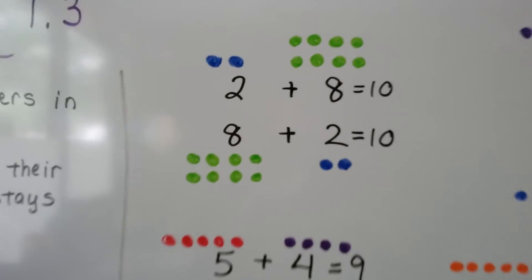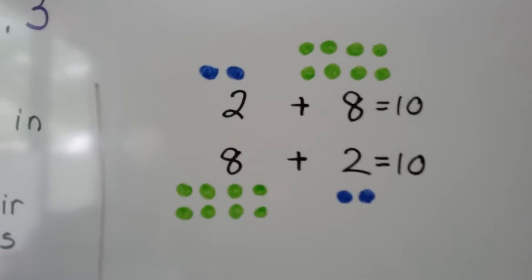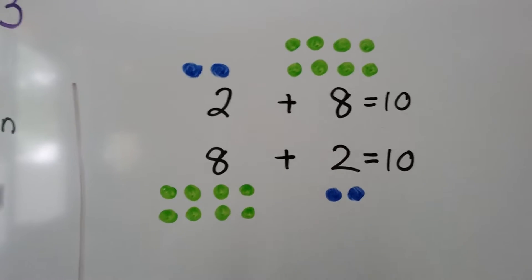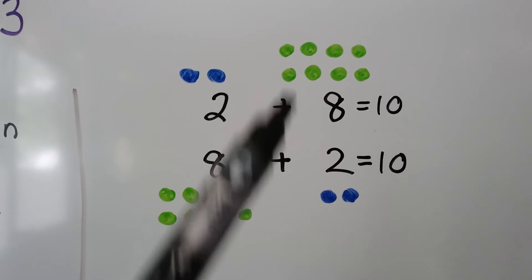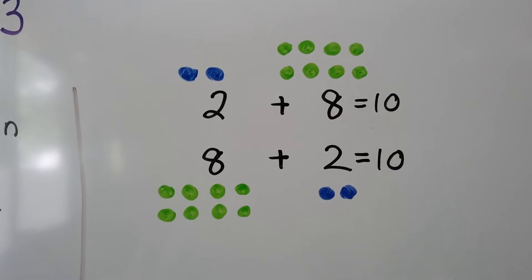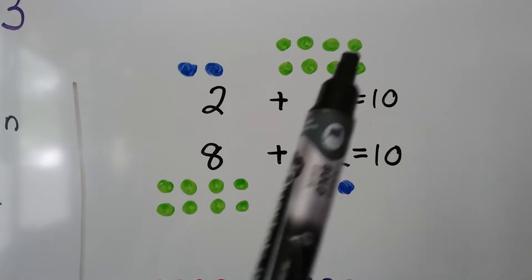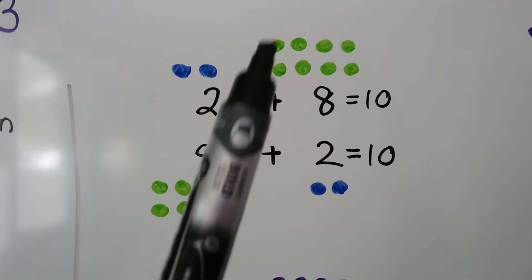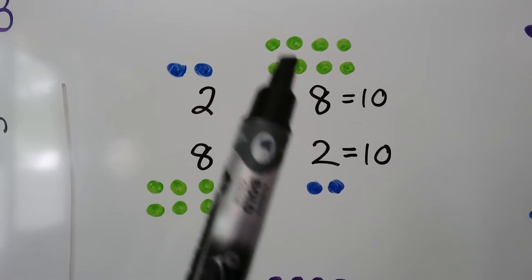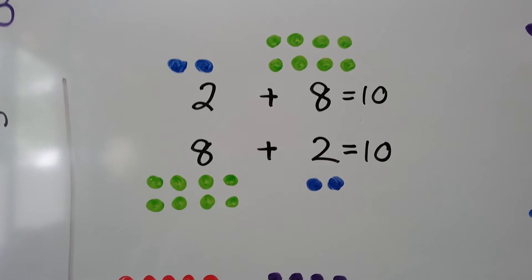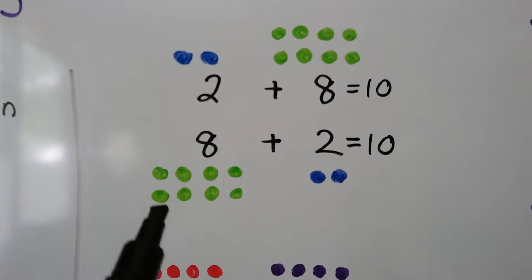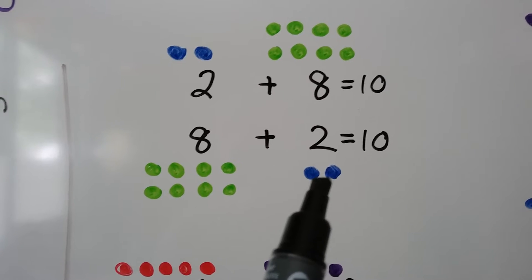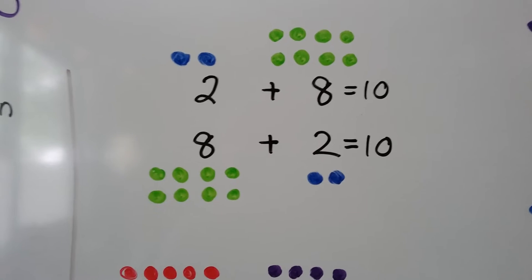Let's look at this first one here. We have two plus eight equals ten. We have two blue ones and eight green ones, and when we count them all together we get ten. When we add the eight green ones to the two blue ones, we still get ten.